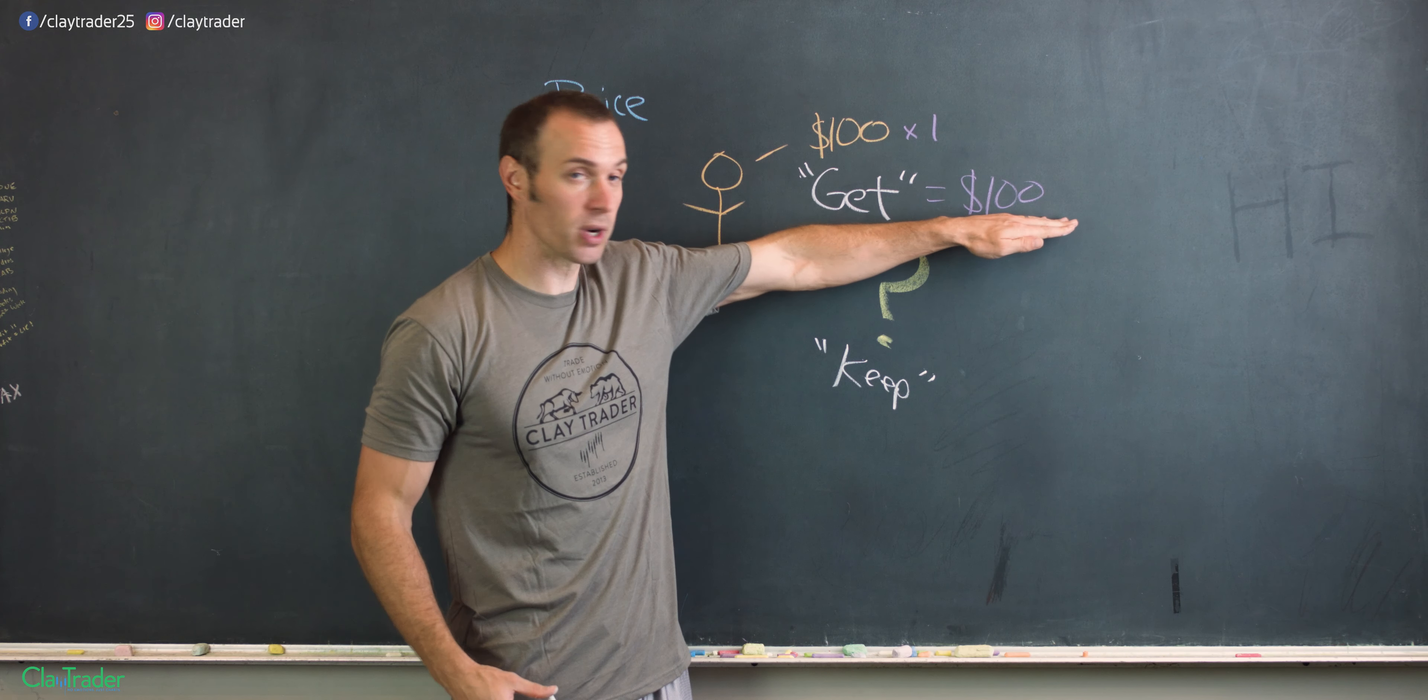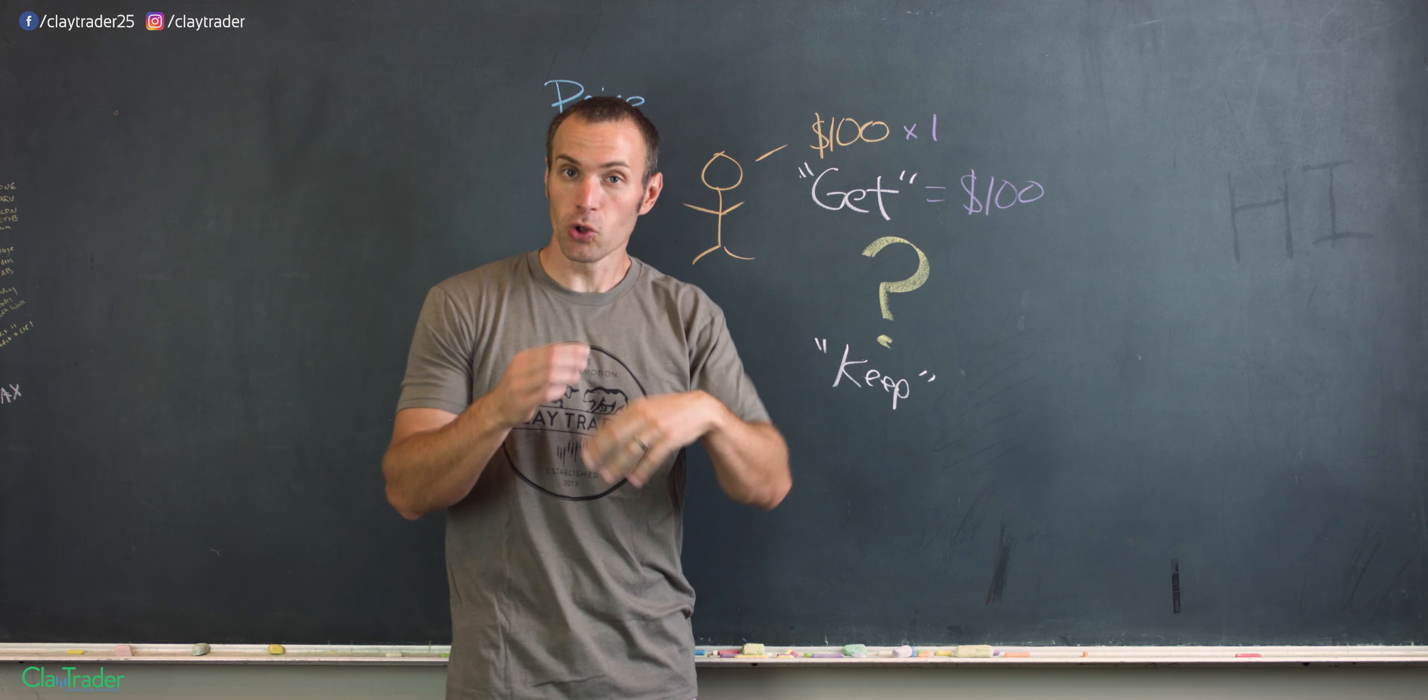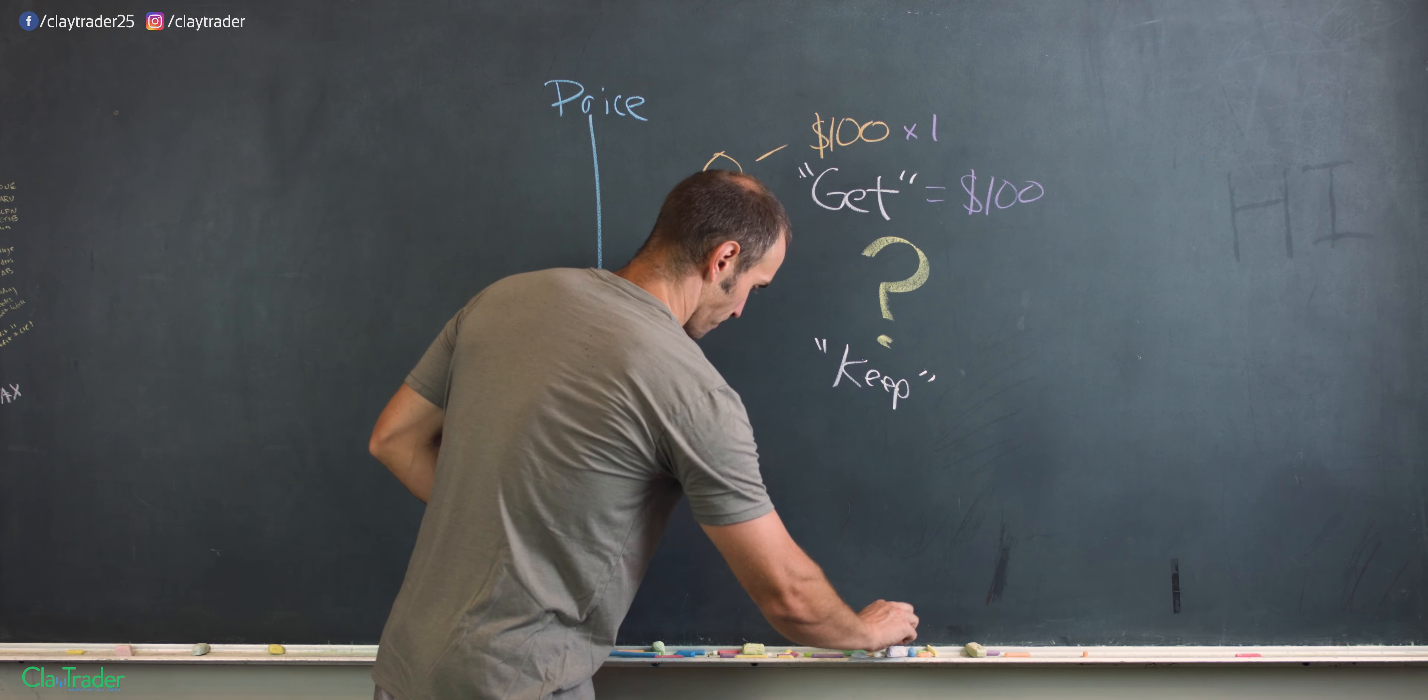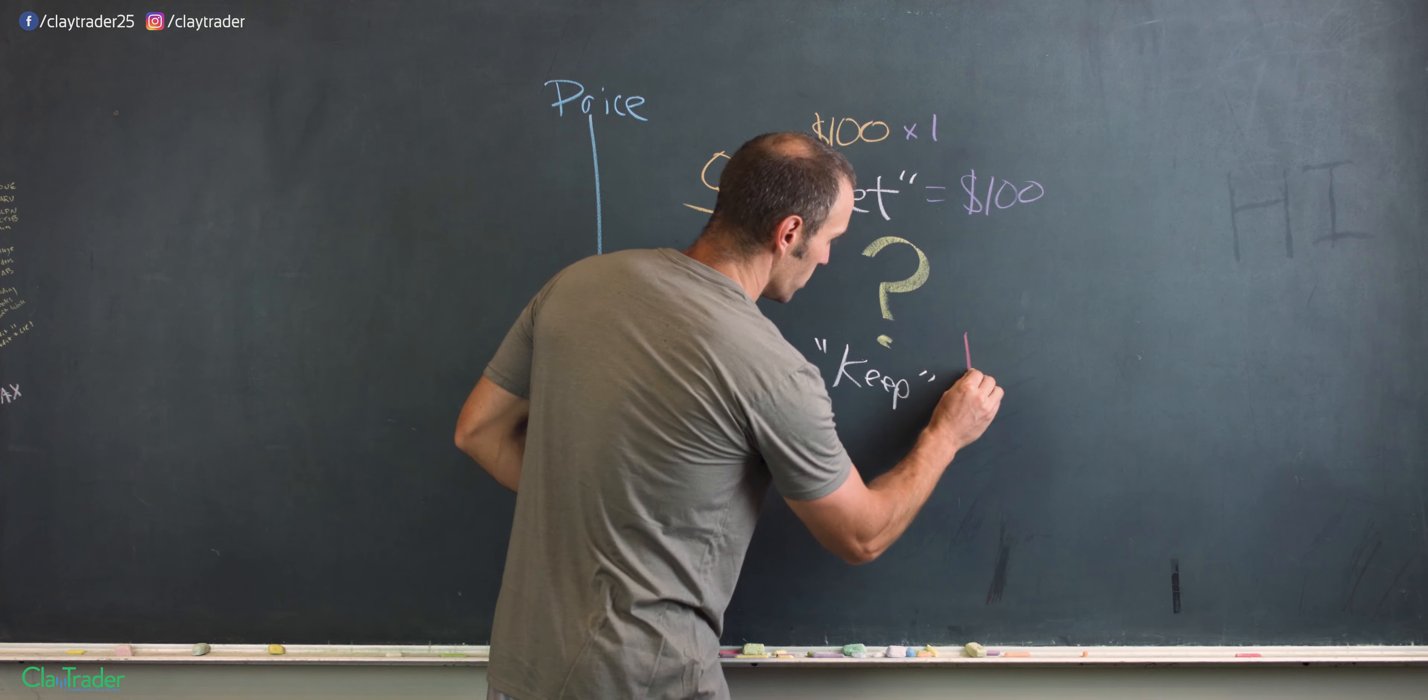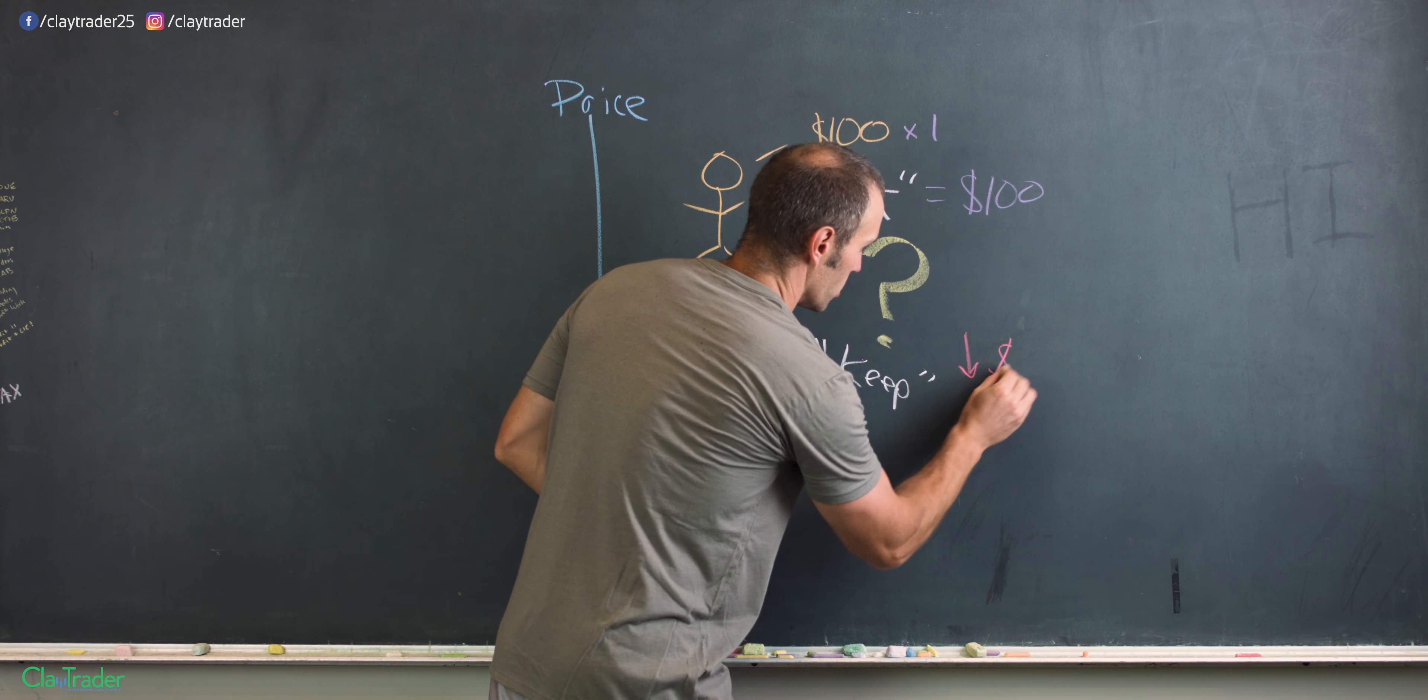You're saying, well Clay, you just told us that he got $100, so he has $100 to go buy the stock. Exactly, so let's look at a couple different scenarios. Let's say in one scenario, the price here drops down, and let's just say in this situation, the stock drops down to $80.